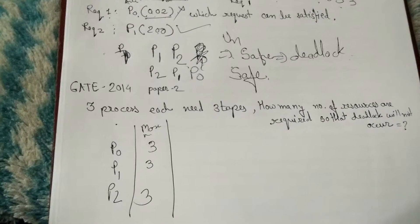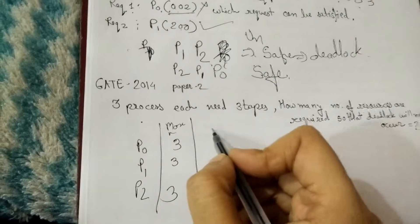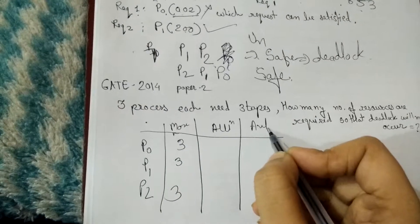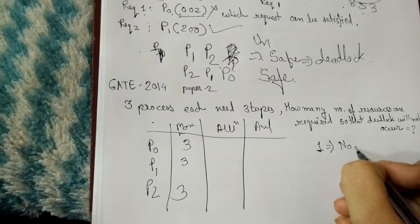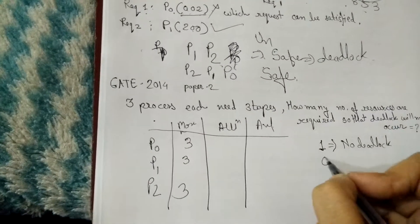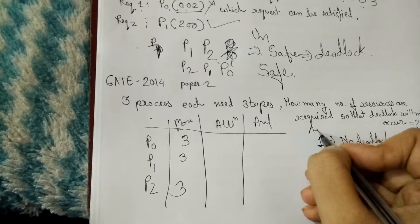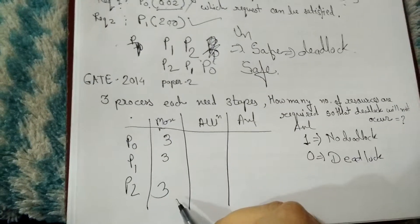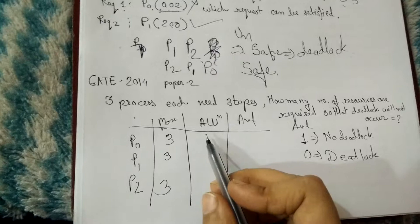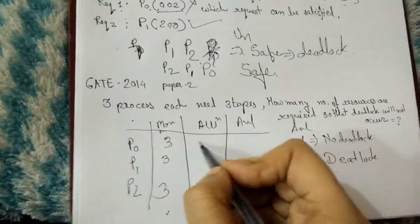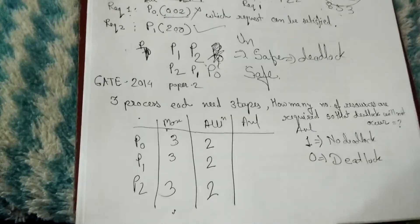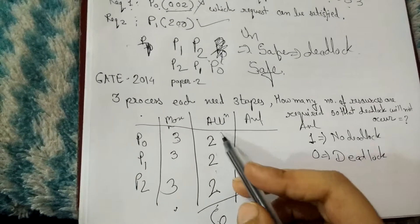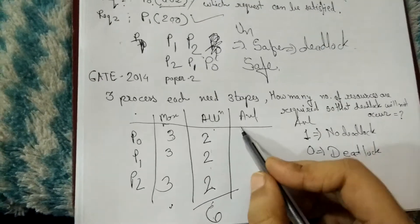This is a tricky question. The approach is: first allocate (maximum minus 1) resources to each process. Since maximum need is 3, allocate 2 resources to each process. With 3 processes, total allocated = 6 resources. If available becomes 0, deadlock occurs, so we need to ensure available is at least 1.